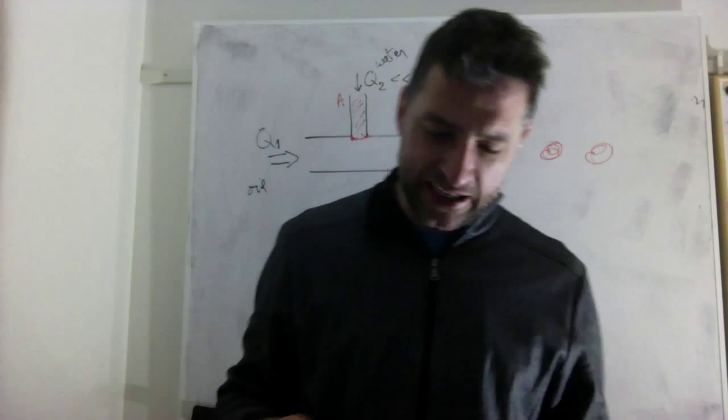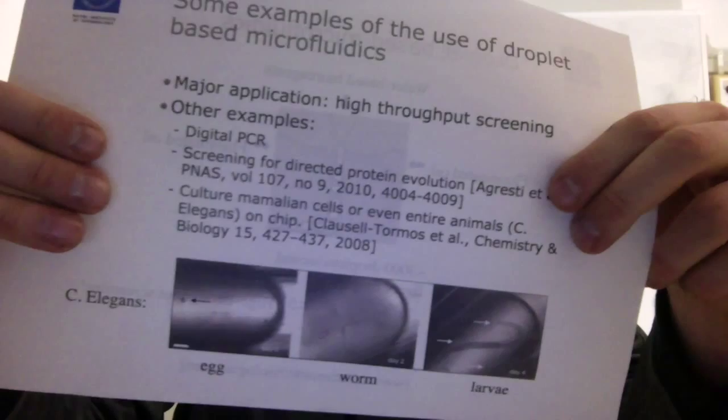You have that also in your slide. So these are C. elegans little worms that they grow. So they put them in as eggs, and then they grow as entire worms of a millimeter long in this kind of droplets.